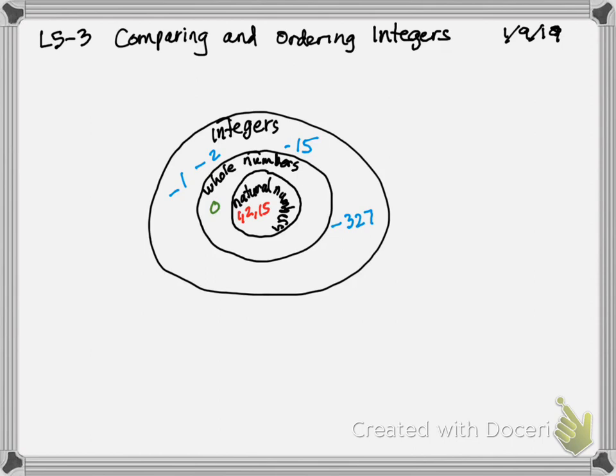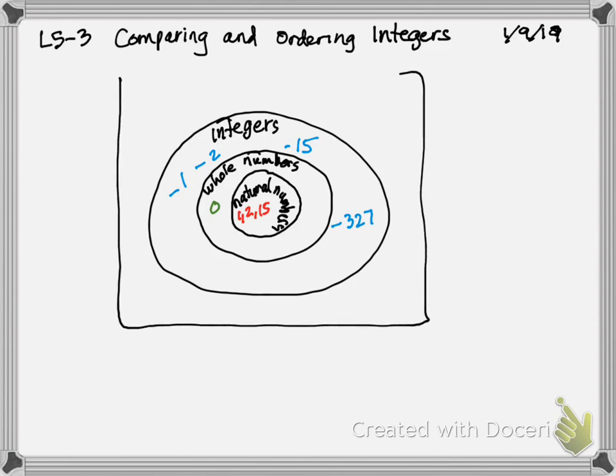Now the kinds of numbers that integers contain that we haven't already talked about. We've got whole numbers and their opposites. So the opposites would be things like negative 1, negative 2, negative 15, even something like negative 327. So it's any whole number, but the opposite. So it's going to be a negative number.